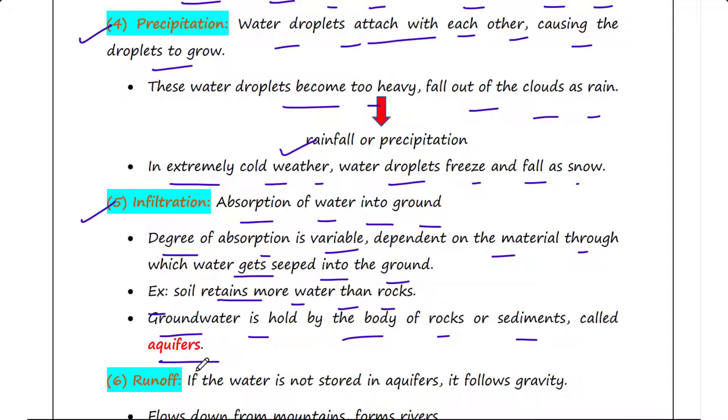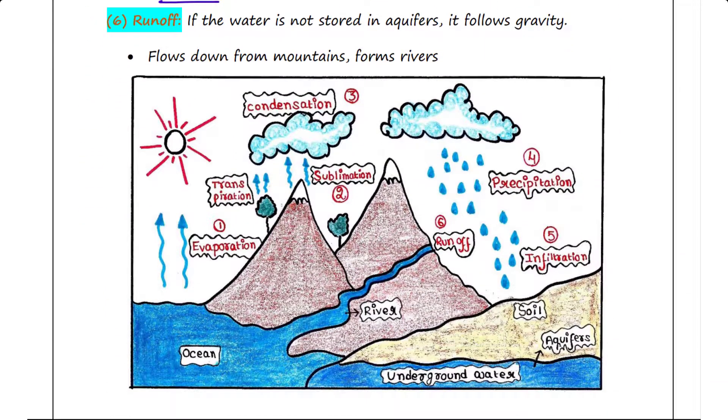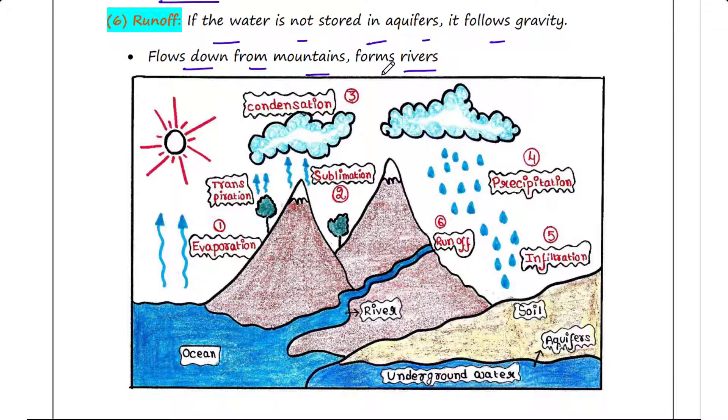The next step is runoff. If the water is not stored in aquifers, it follows gravity, such as flowing down from mountains and gradually forming rivers. This process is termed as runoff.